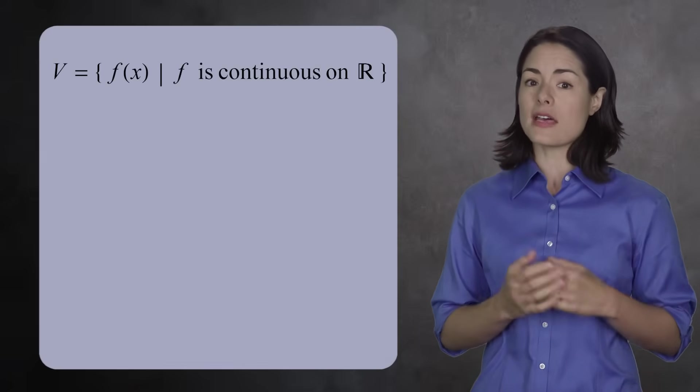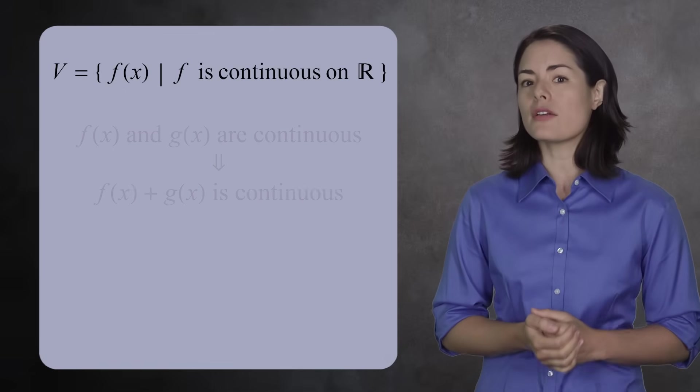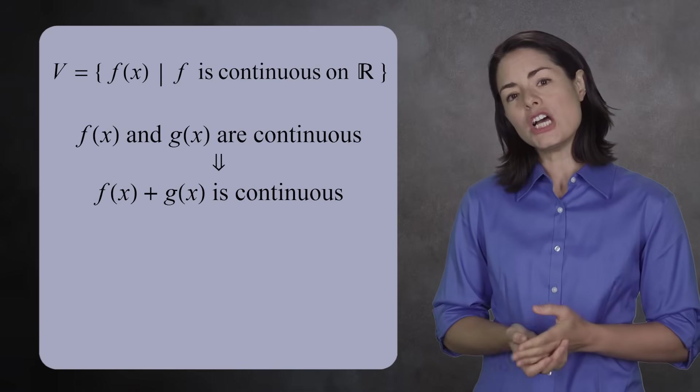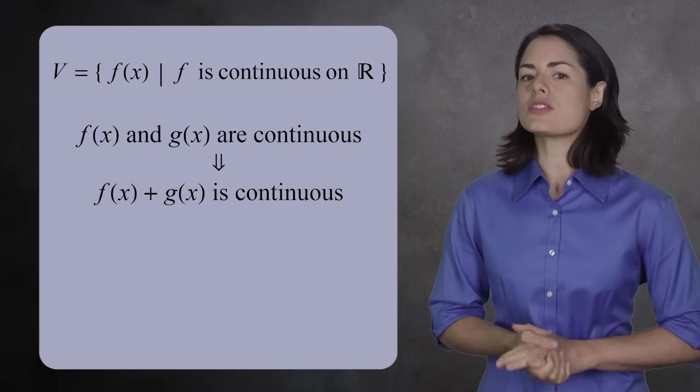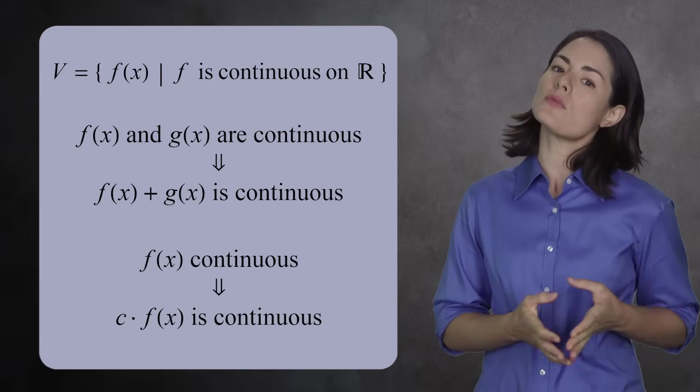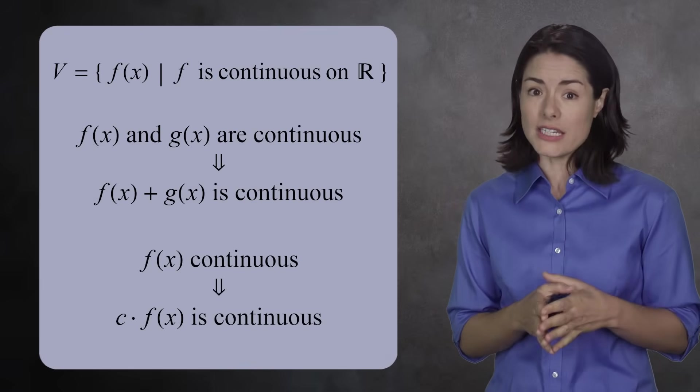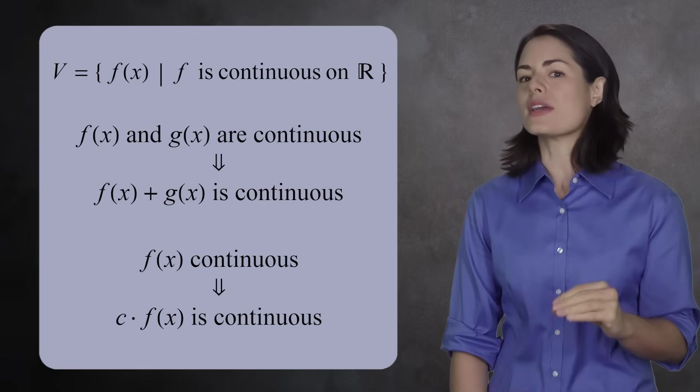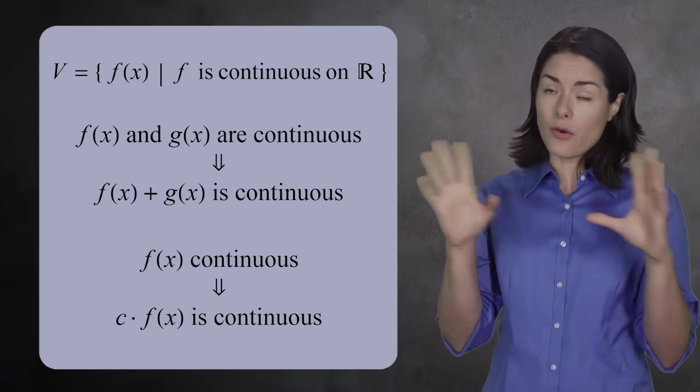Let's see one more example. Consider the set of functions which are continuous over all real numbers. In calculus, you learn that if you add 2 continuous functions, you get another continuous function. It's also good practice to check that multiplying a continuous function by a real number doesn't cause any problems. It's still a continuous function. This is a great example of a vector space that really departs from the original idea of arrows in space.